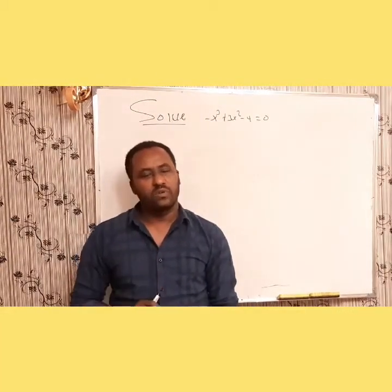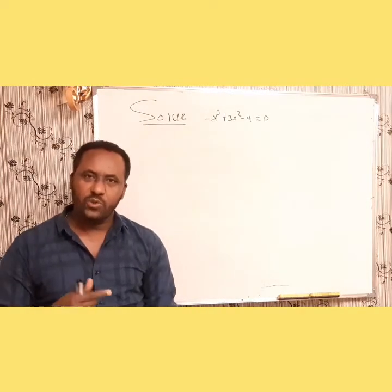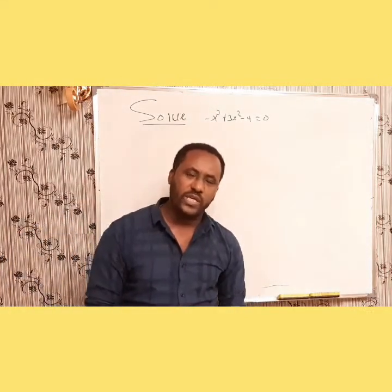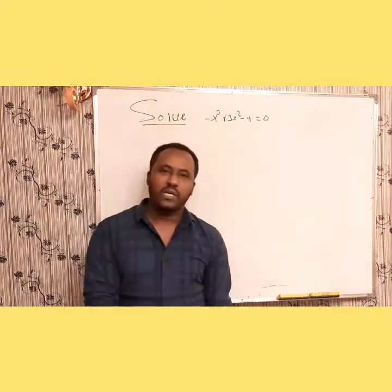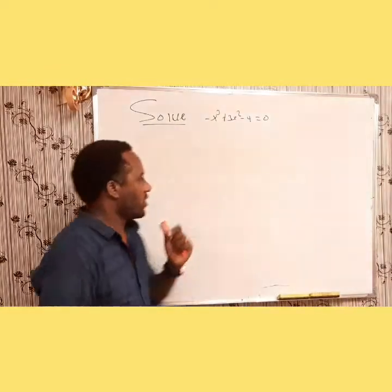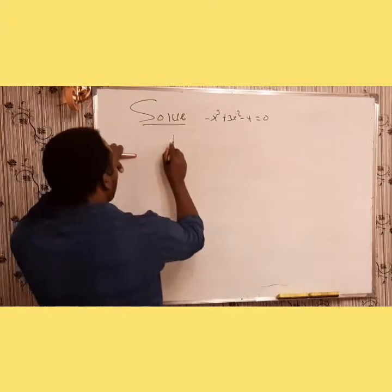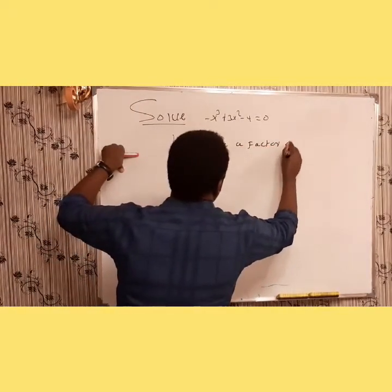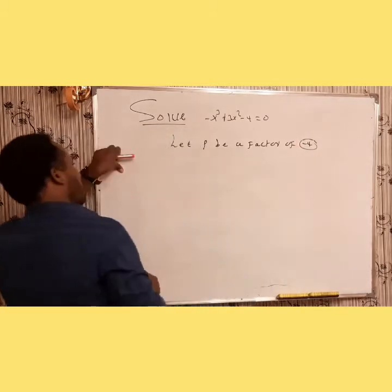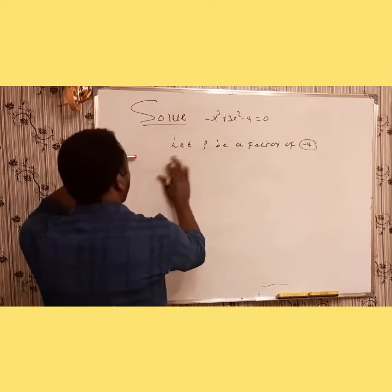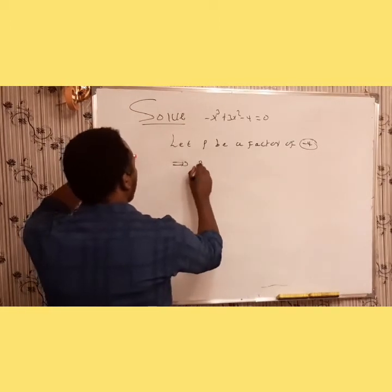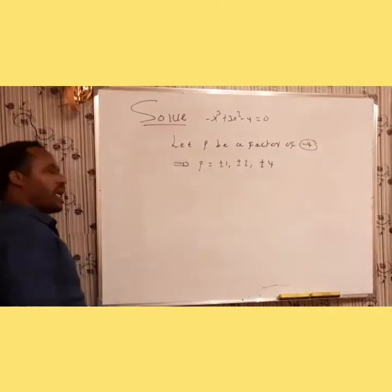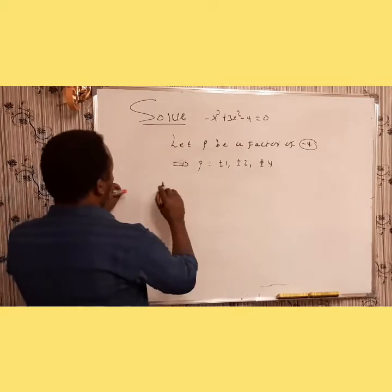First, let's use a very important method: the Rational Root Test Theorem. Based on this theorem, let's find the possible rational zeros of this equation. Let p be a factor of the constant term, which is -4. So p will be ±1, ±2, and ±4 — these are the factors of the constant term.